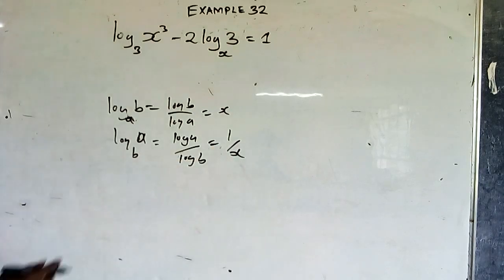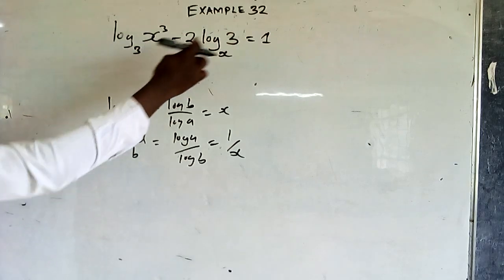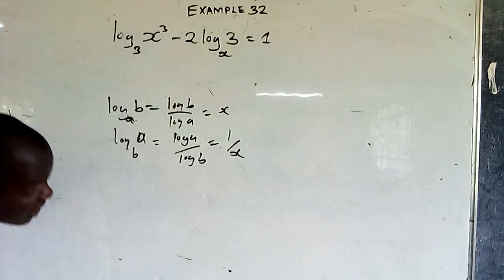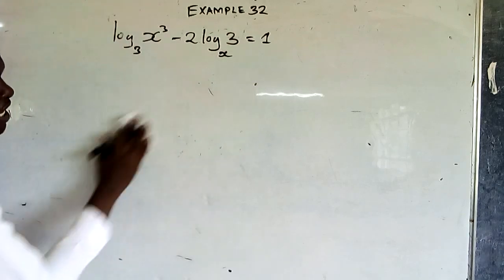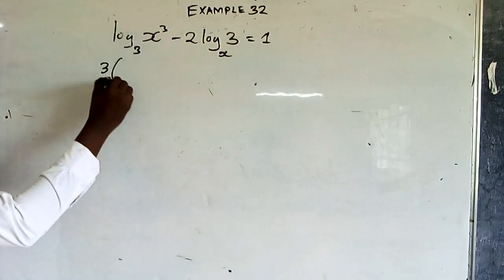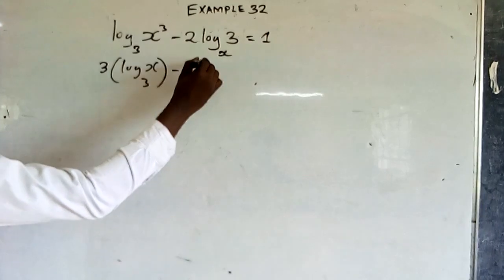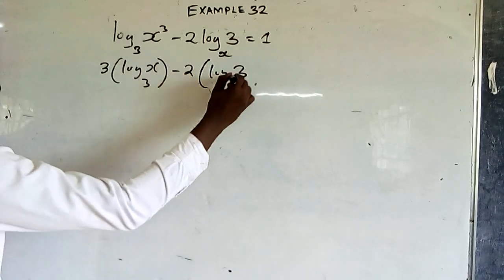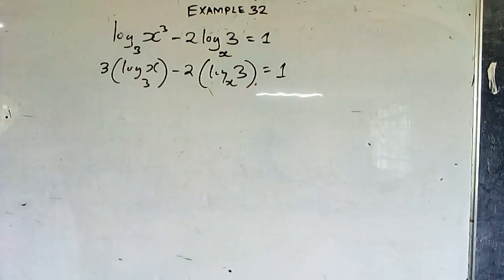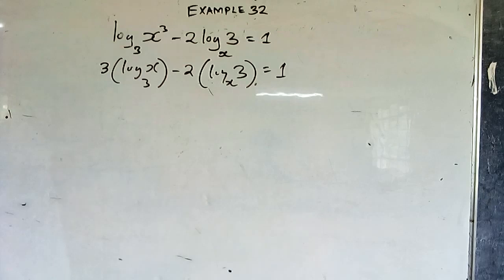From the equation, we have log x to base 3 and log 3 to base x. The power 3 on x can be written as a coefficient, so we rewrite: 3·log x (base 3) minus 2·log 3 (base x) equals 1. We cannot combine logs with different bases, so we substitute.